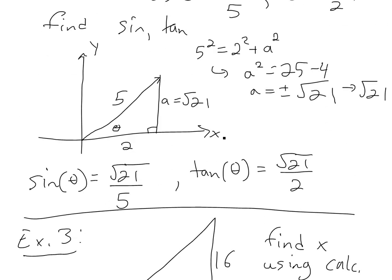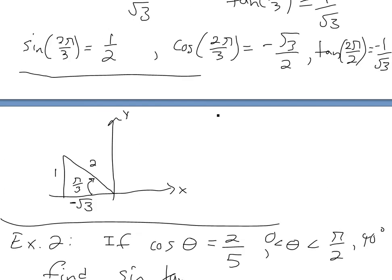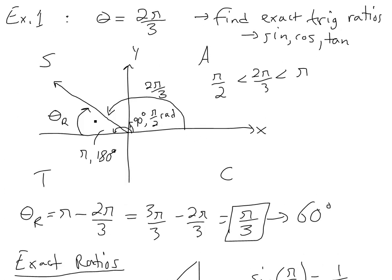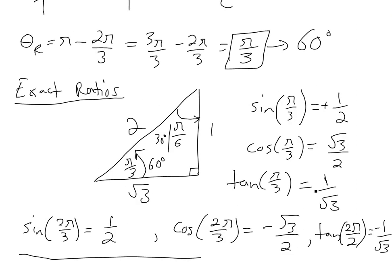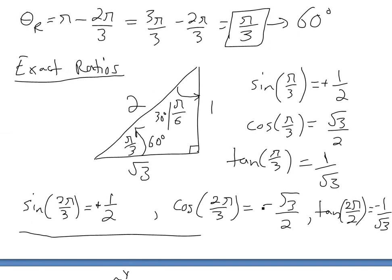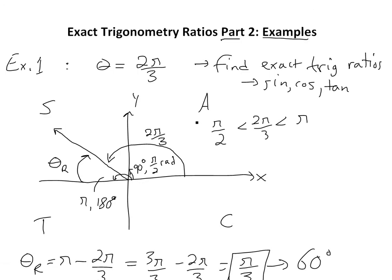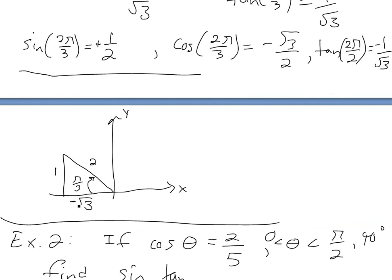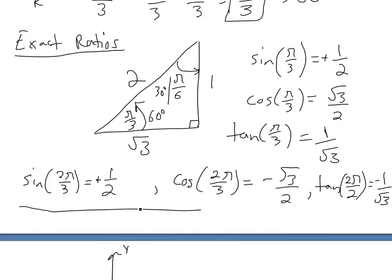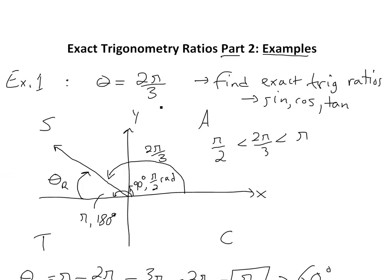So those are a few examples using trig to find values. For Example 1, remember to look at the reference angle and use 'All Students Take Calculus' to determine signs: in quadrant 1 everything is positive, in quadrant 2 only sine is positive, in quadrant 3 only tangent is positive, in quadrant 4 only cosine is positive. Thanks for tuning in and hope you learned something. Stay tuned for another math easy solution.